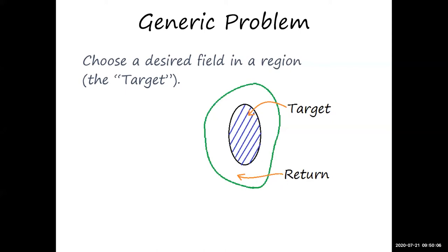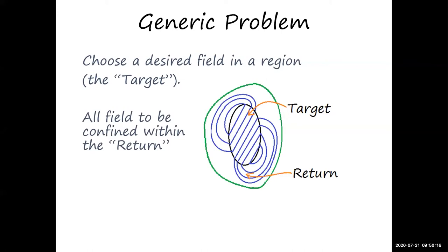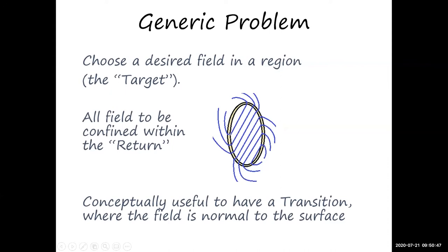We call the first region the target and the second region the return. To facilitate things, instead of thinking about one boundary region between the target and the return, we separate them with a thin transition region — almost like a no-man's land — giving two boundaries, one associated with each region. The requirement for this transition region is that the lines of flux will be perpendicular to both surfaces going through it.